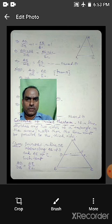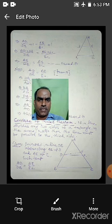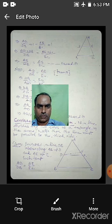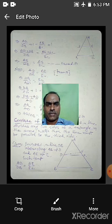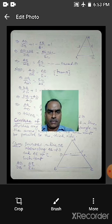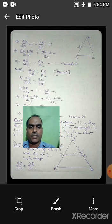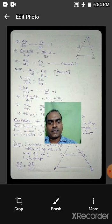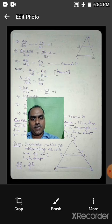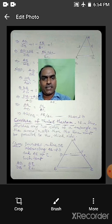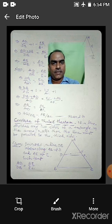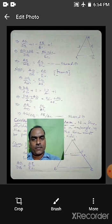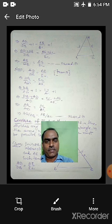Now, taking equation 1: AD/DB = AE/EC. Taking the reciprocal of both sides gives DB/AD = EC/AE. Again adding 1 to both sides: LCM becomes AD on the left, giving (DB + AD)/AD, and AE on the right, giving (EC + AE)/AE. Adding DB + AD = AB and EC + AE = AC, we get AB/AD = AC/AE. Taking the reciprocal again: AD/AB = AE/AC. Thus the second corollary is proved.